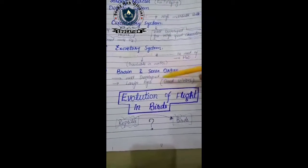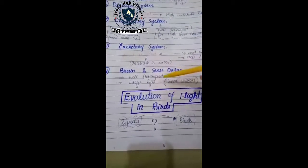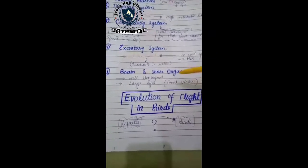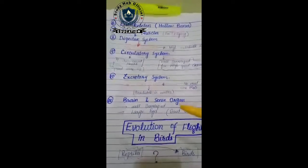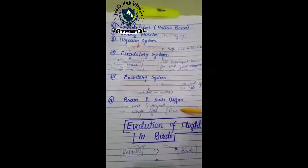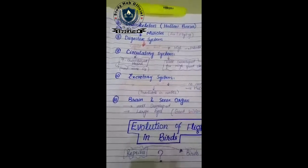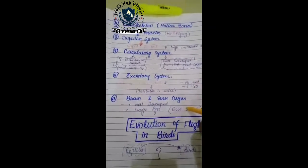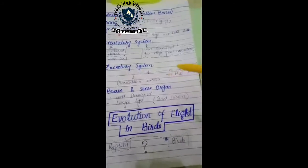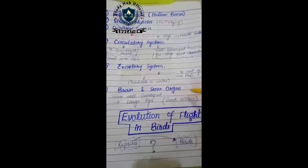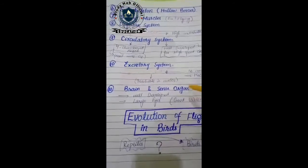Next is brain and sensory organs. Their brain and sensory organs are also very well-developed. Their eyes are large and they have good vision — as everyone must have noticed, birds have very strong vision. For example, take the crow — the moment it gets an opportunity it can trick you. If we discuss all these characters in detail, the summary is that birds are well-developed in terms of their environment and their body is best adapted to their habitat.